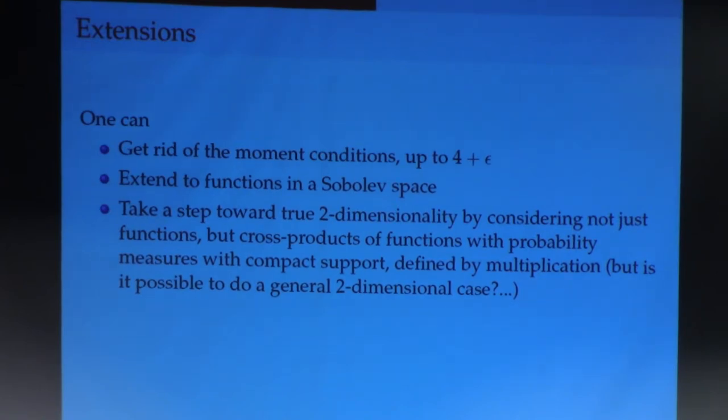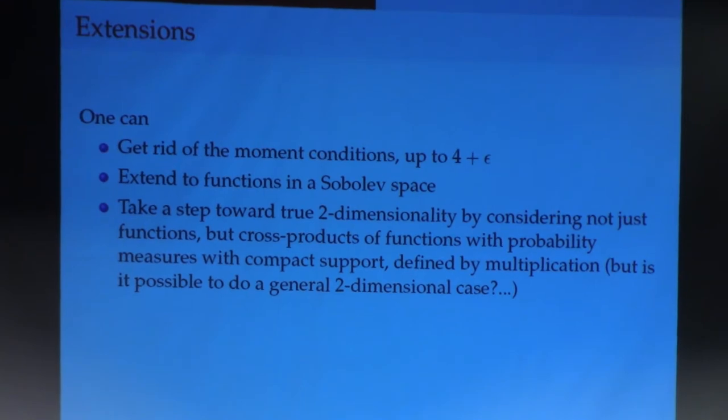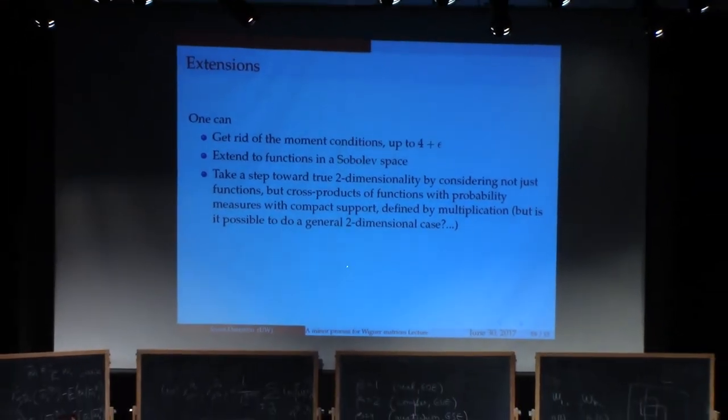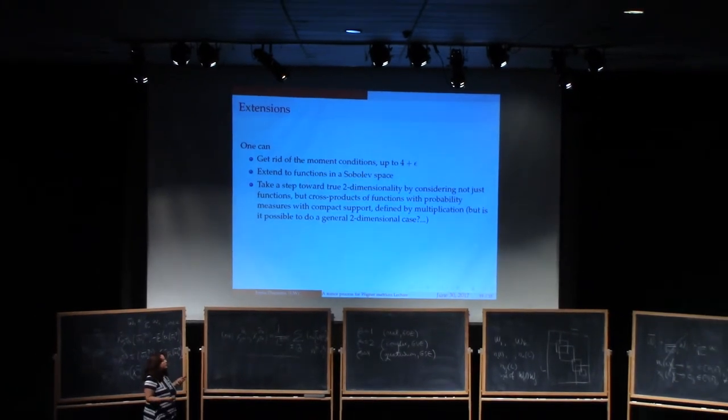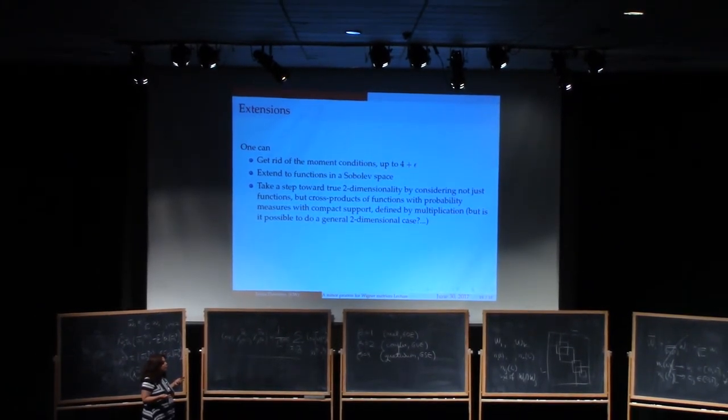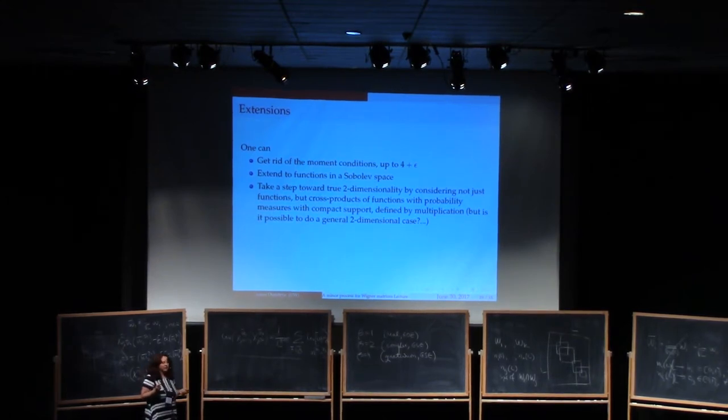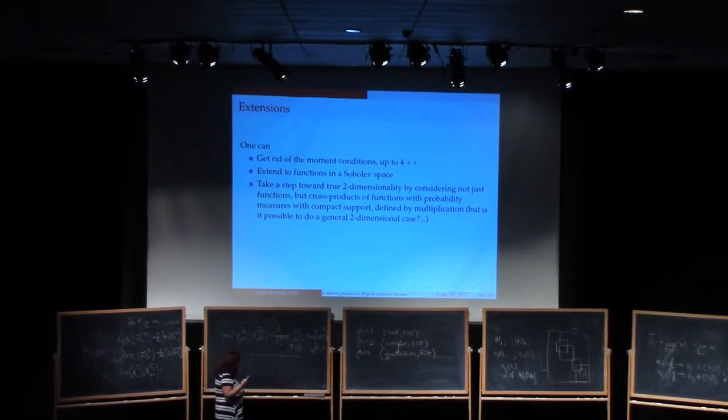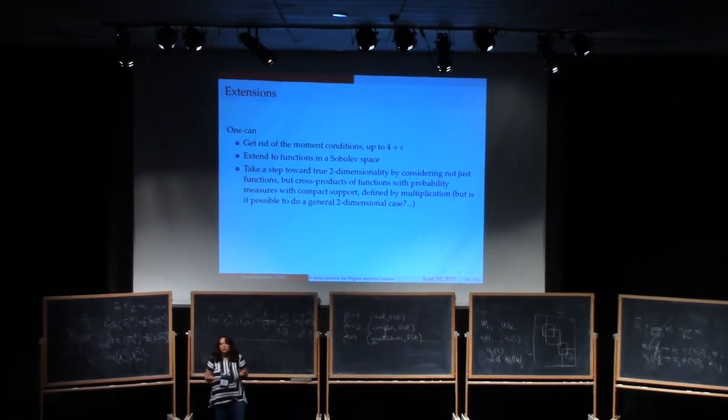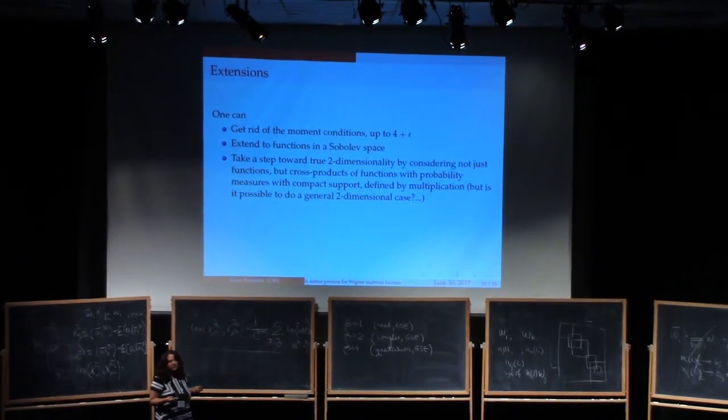And you can take a step. So this is for people who already know what the Gaussian free field is and who are interested in this topic. You can take a step toward true two-dimensionality by not looking at just functions, so not doing this just for functions of one variable, but by doing it for cross-products of functions with probability measures on compact sets, with compact support, sorry. And you define, but the way you define that is very simple. You define things by multiplication, so it's f of x, rho of y. So it's not general, sadly. But it is more two-dimensional because you'll have two objects over which you can define this height function process which converges to the Gaussian free field. So the remaining question, an open question, is can you extend that? Can you extend that to any kind of function of two variables? How would you do that? And it's an open question.